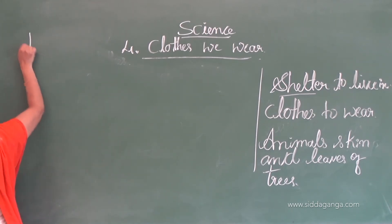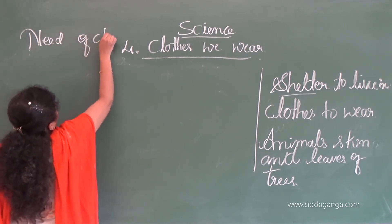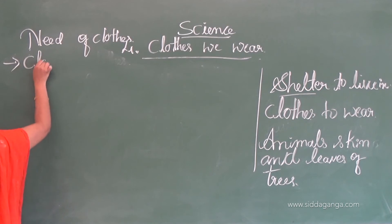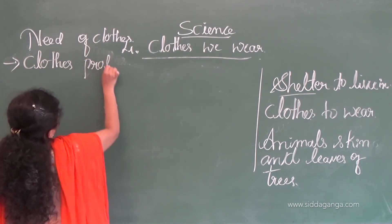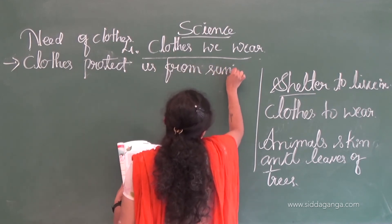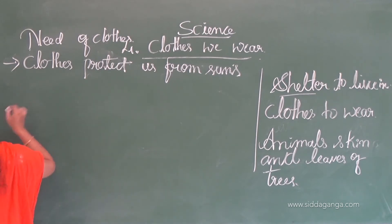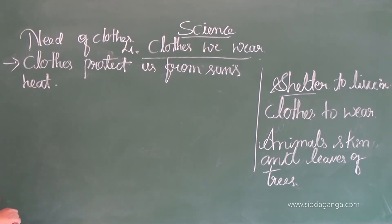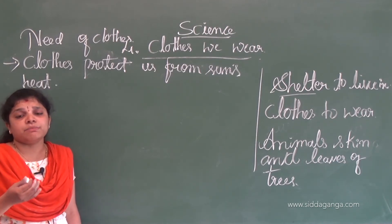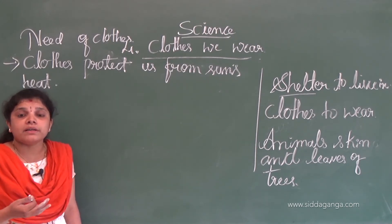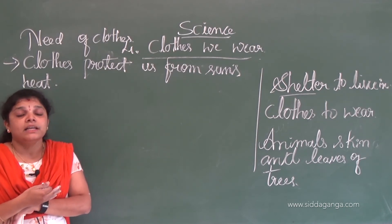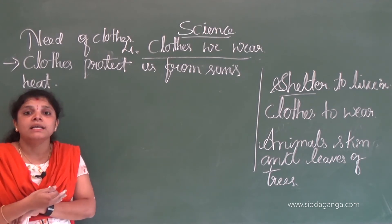Now, the need of clothes. First point: clothes protect us from the sun's heat. If we don't cover our body, the sun emits ultraviolet rays which can damage our skin and cause cancer. That is why we need clothes to cover our body — clothes protect us from the sun's heat.